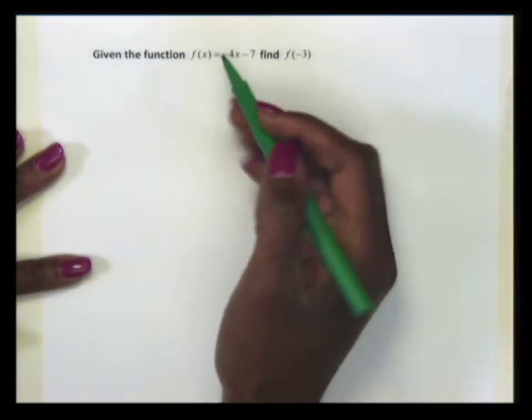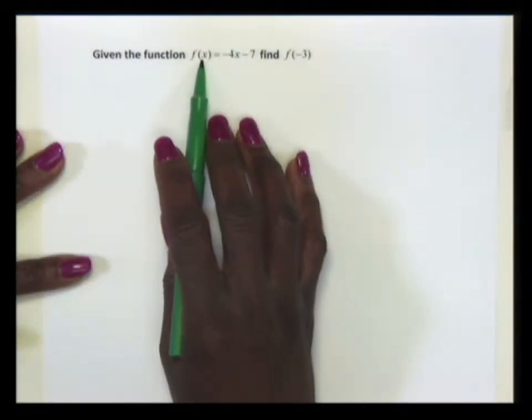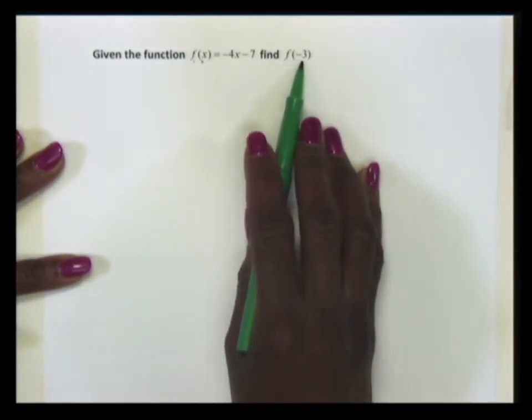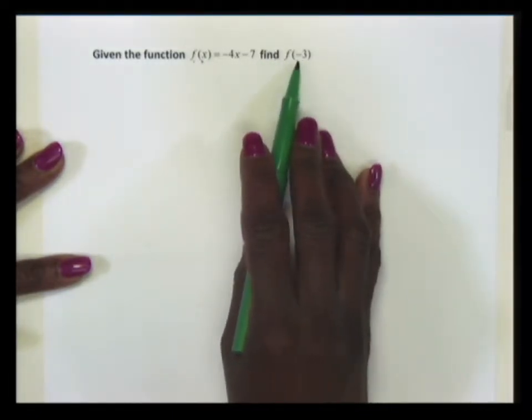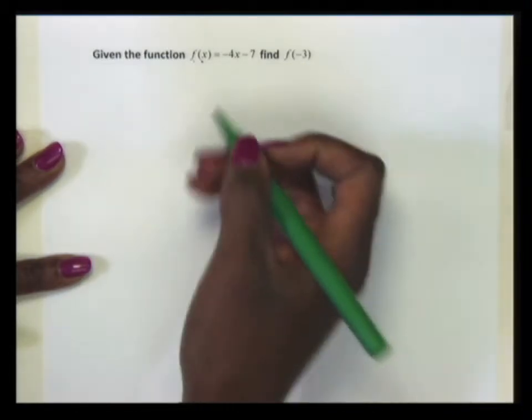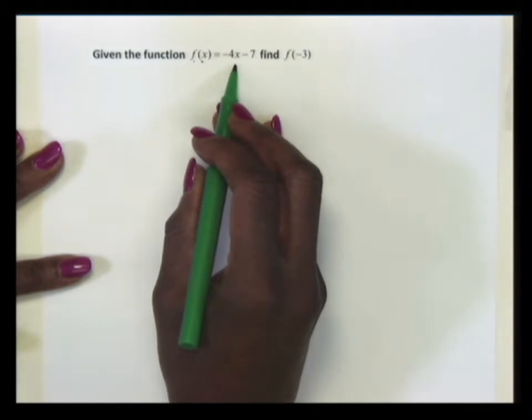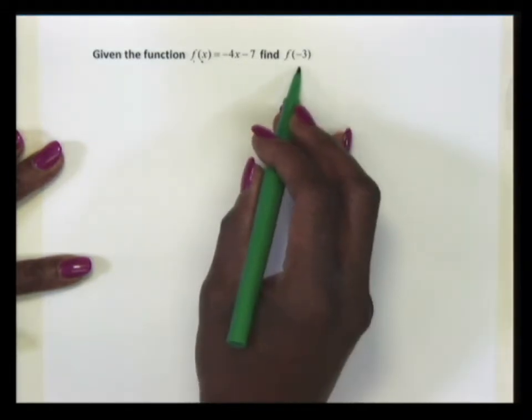When you look at the problem, the value of x in f(x) is replaced with the number -3 in the value that we're trying to find. So anywhere we have the value of x in the function, we will replace the x with -3.